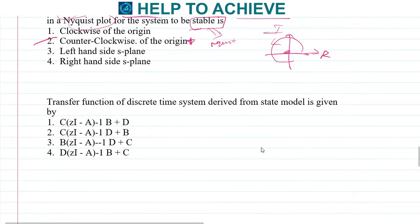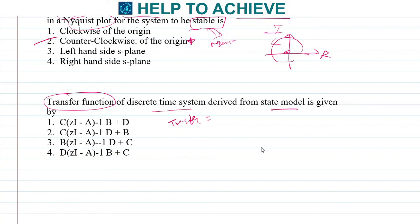Next: the transfer function of a discrete time system derived from a state model is a straightforward definition or formula where the transfer function is expressed in terms of the system matrices.